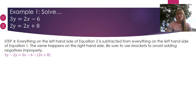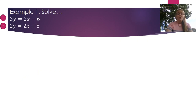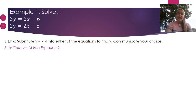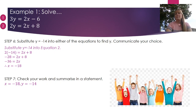On the left I have 3y - 2y, and on the right: (2x - 6) - (2x + 8). Expanding the brackets gives me -2x and -8. Collecting like terms, I find y = -14. The final step is to substitute y = -14 into one of the equations — I'll choose equation 2 because it has all positive numbers and smaller values. Solving through carefully, I find x = -18. As always, check your work and write a summary statement.